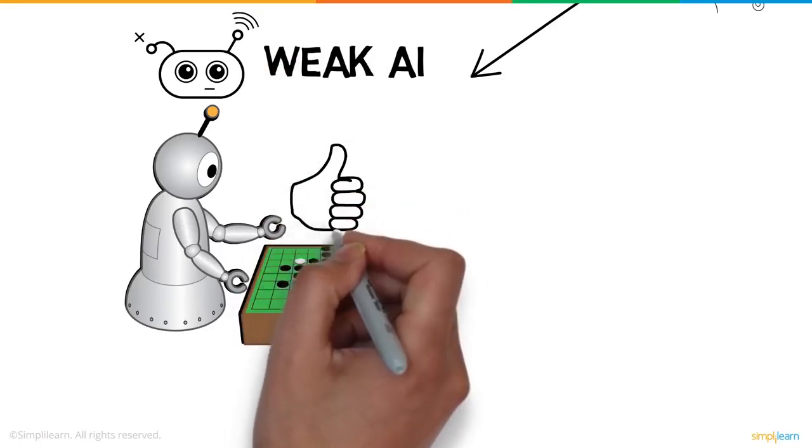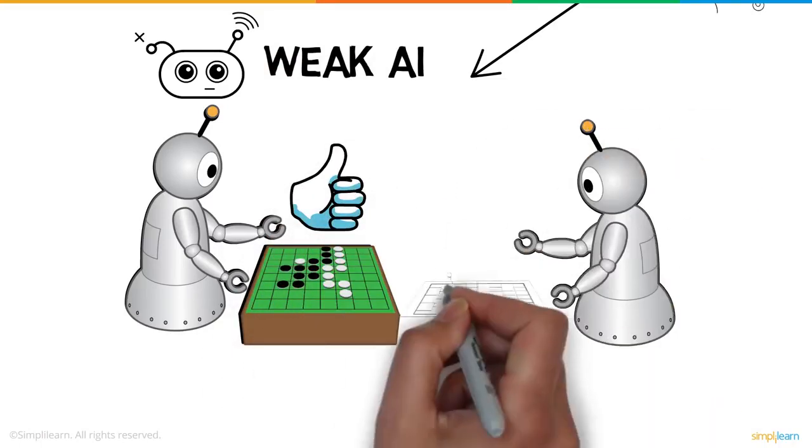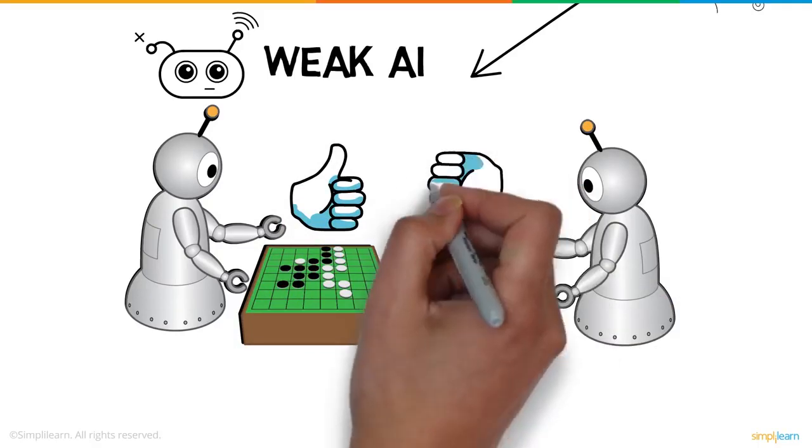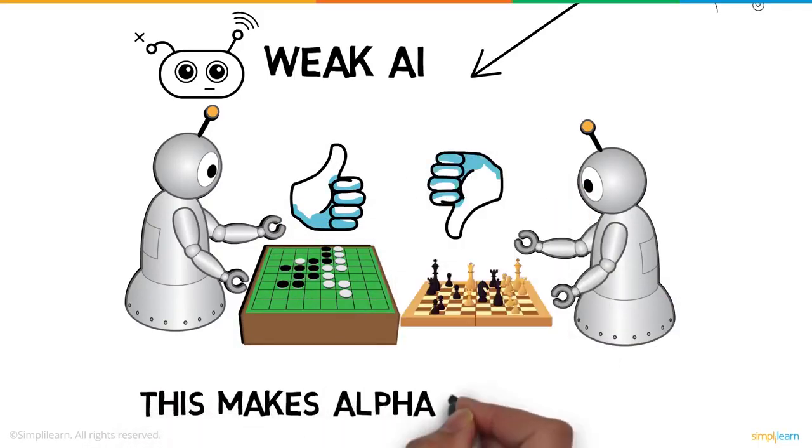AlphaGo is a maestro of the game Go, but you can't expect it to be even remotely good at chess. This makes AlphaGo a weak AI.